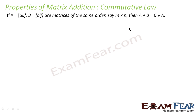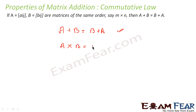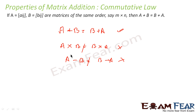Commutative law: if there are two matrices A and B of the same order — please note, to add two matrices the order must be the same — then A plus B is equal to B plus A. For multiplication, this is not true: A cross B is not equal to B cross A. For subtraction also, A minus B is not equal to B minus A, so commutative law is not true for subtraction either.